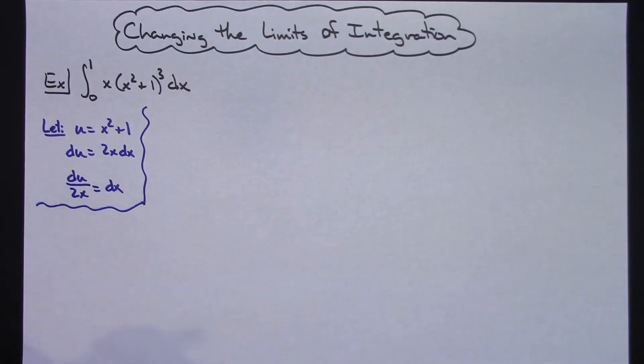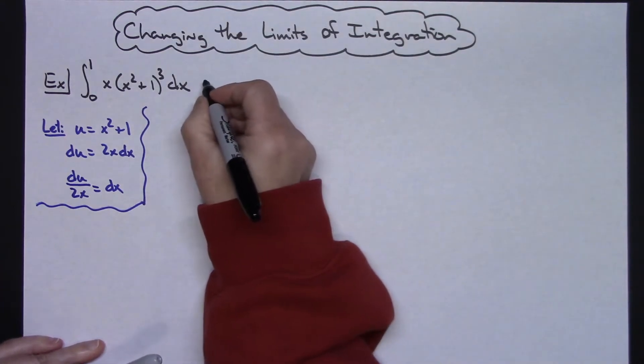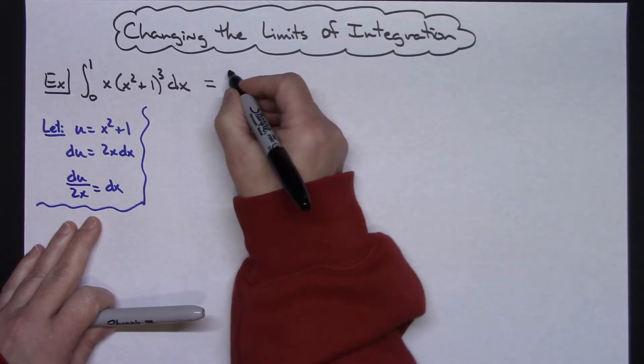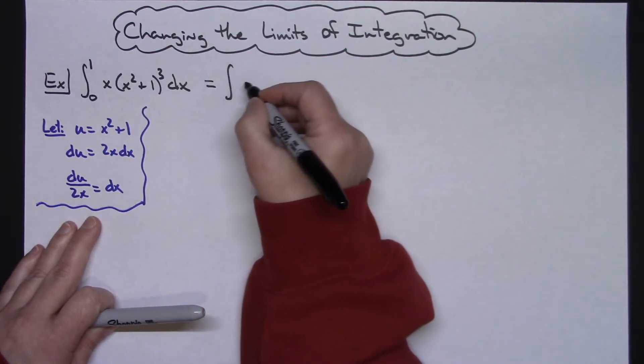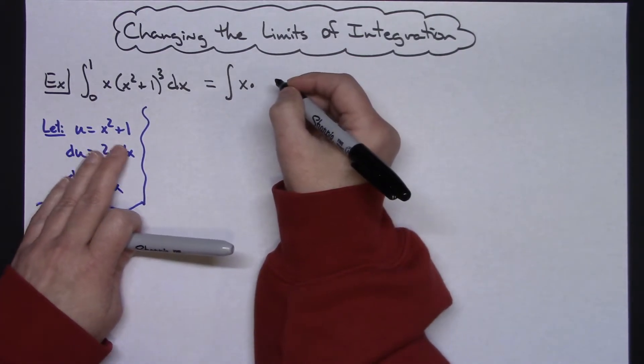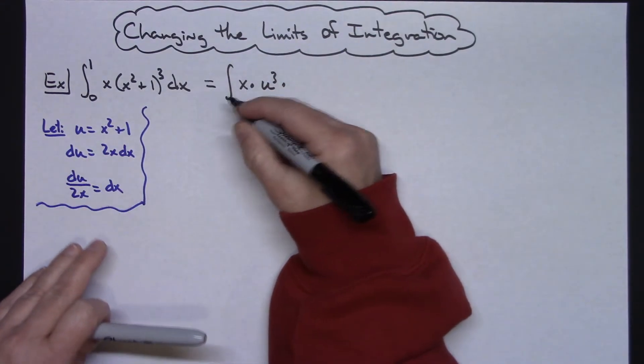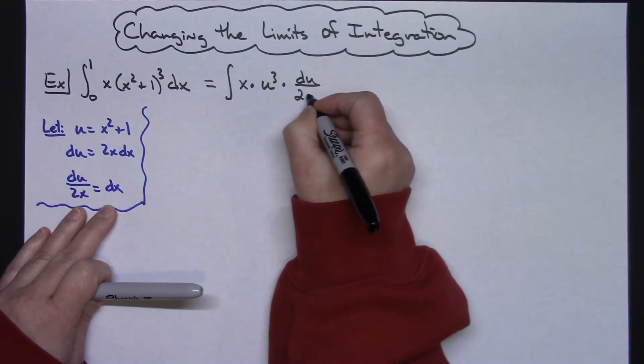So then writing that down so that we can visualize it. Now I'm going to come over here. And I'm going to then simplify this doing some plugging back in here. So I'm going to remove my 0 and 1 in this step because I'm going to have x's and u's right here. So the x is going to stay. I'm going to replace my u there, u to the third, and replace my dx with my du over 2x.